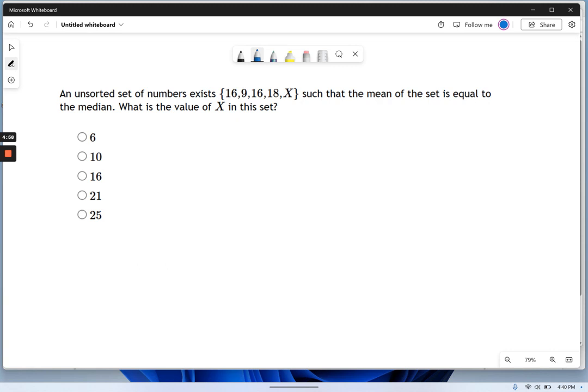This question is trickier than it looks. We have a set of five numbers, but I don't know one of them. We don't know what x is, but I'm given a clue. I'm told that the mean of the set is equal to the median. So what's the value of x?